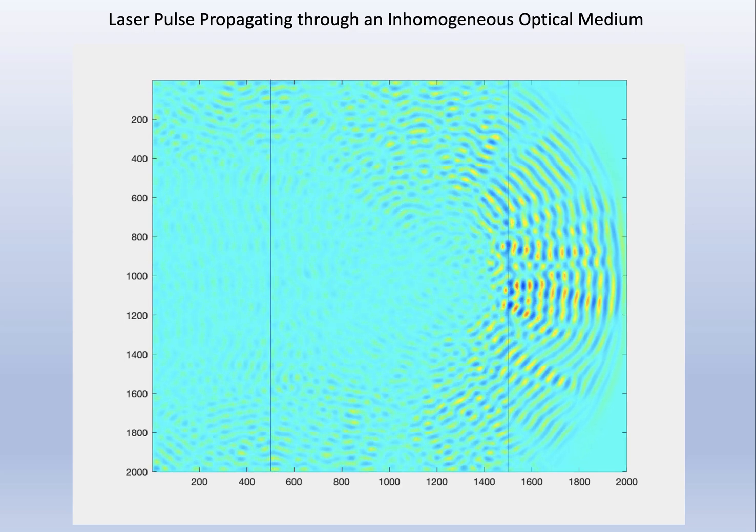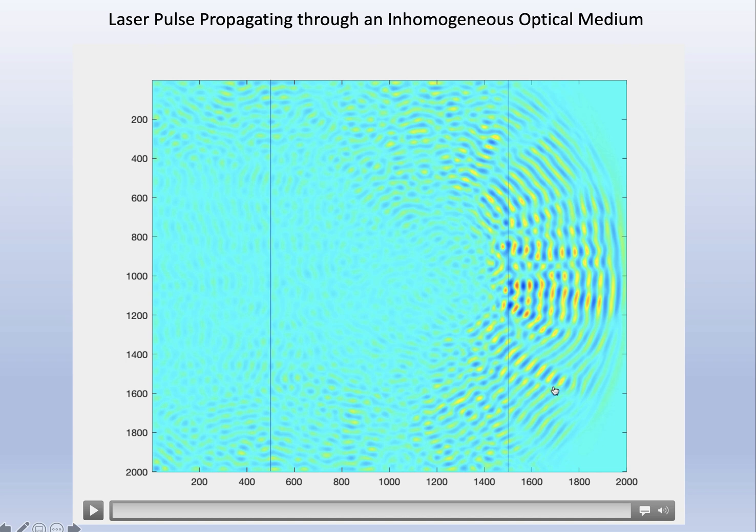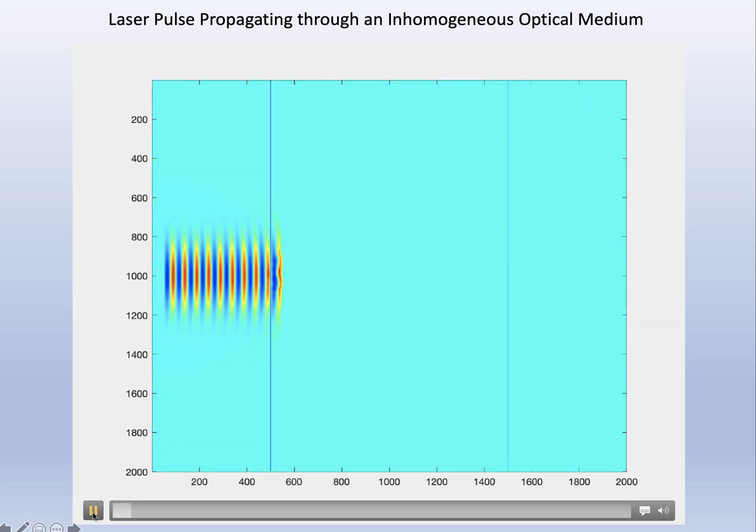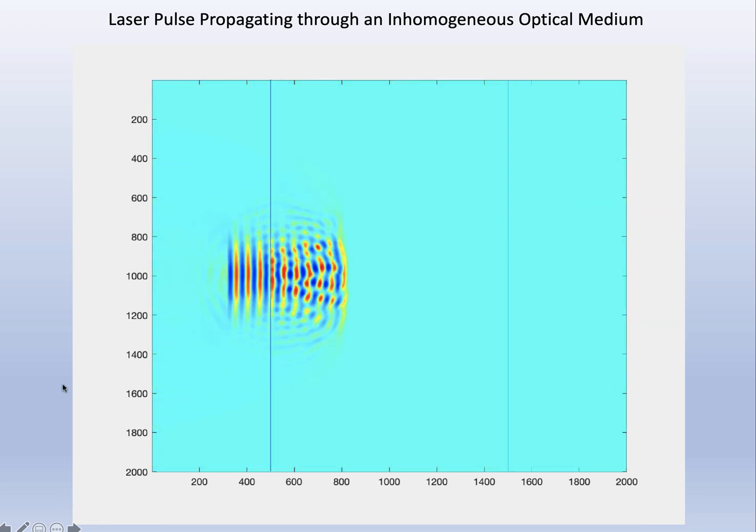As this pulse moves through this inhomogeneous medium, we could take a linear cross section somewhere - let's say here - and what we would get would be two-dimensional speckle. But it's actually coming from these scattered waves. Let me just play that again - it's kind of fun to watch.